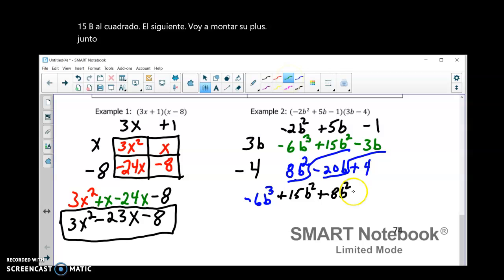Then, I'm going to have negative 3B minus 20B. And then, my final term is going to be plus 4. So, I'm going to combine all my like terms.